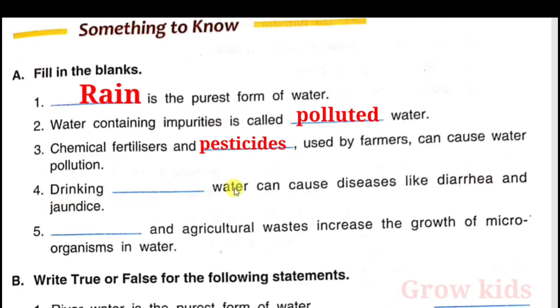Question 4: Drinking unclean water can cause diseases like diarrhea and jaundice.